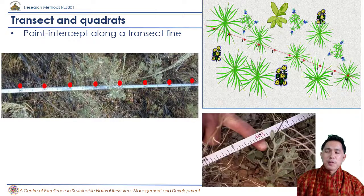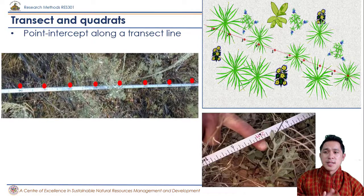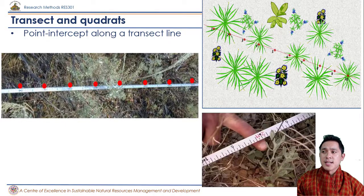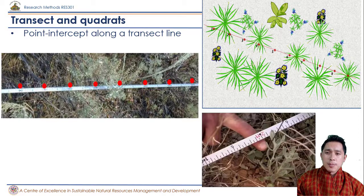Let us look at how to mix transects and quadrats. It's not only the transect that you're looking at in the field in reality, but sometimes you need to mix the theory of transects and quadrats together. The first method is point intercepts along a transect line. This is basically a transect line where, on every interval based on your species, some may require as small as 0.5 meter between two intervals.